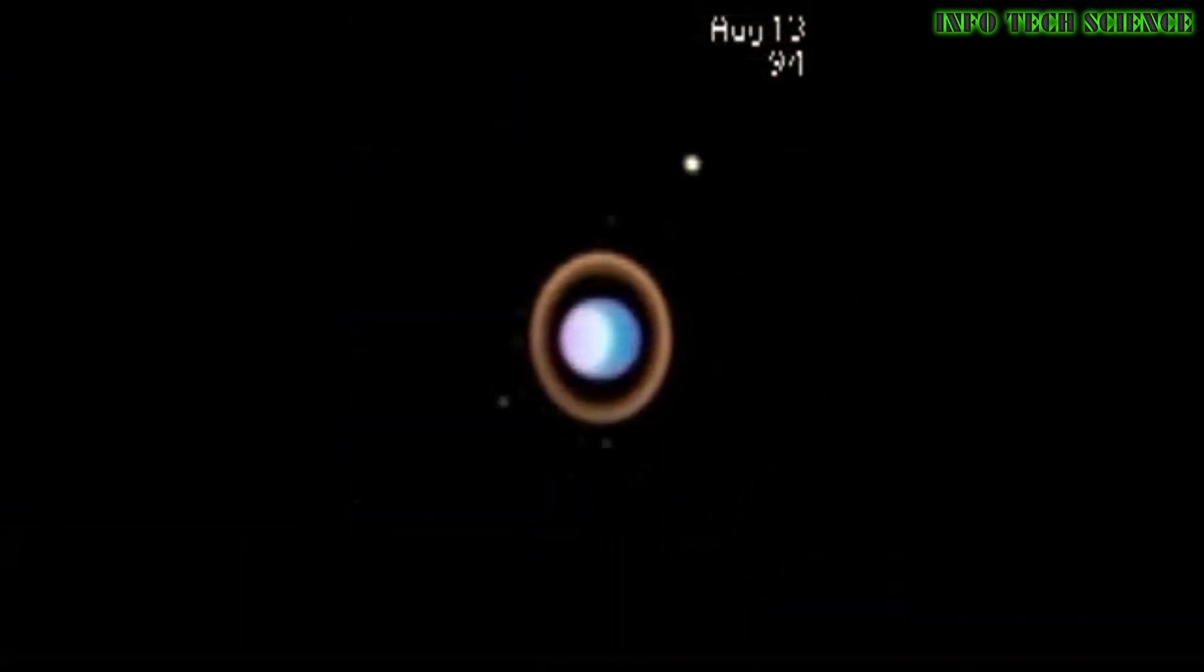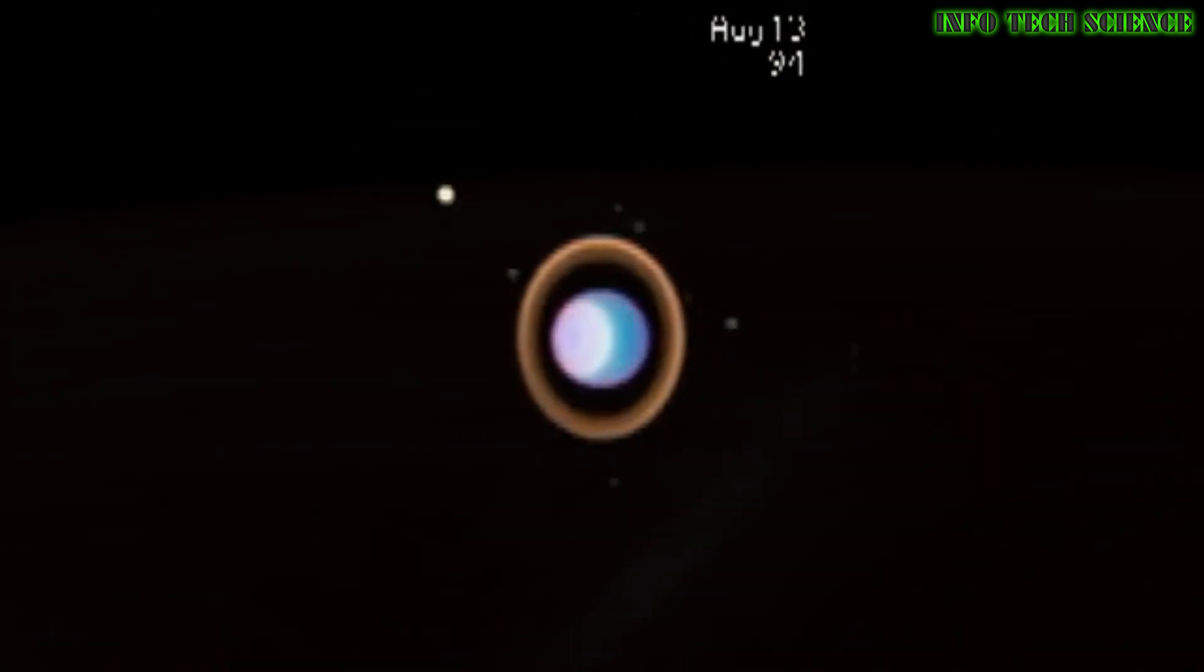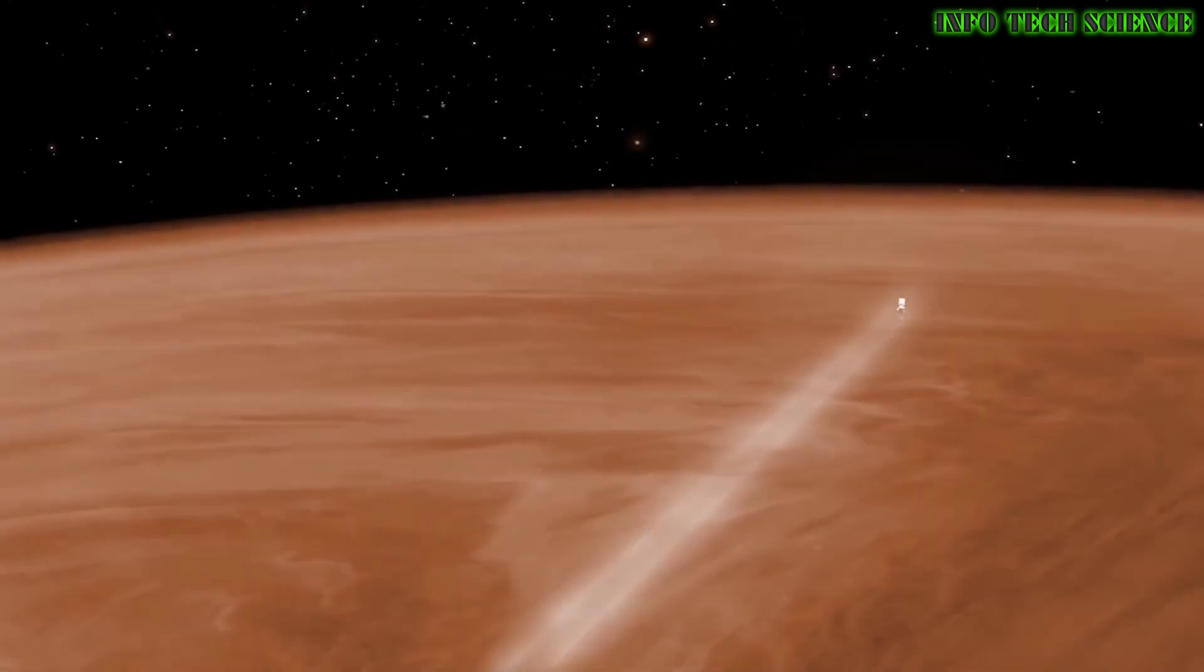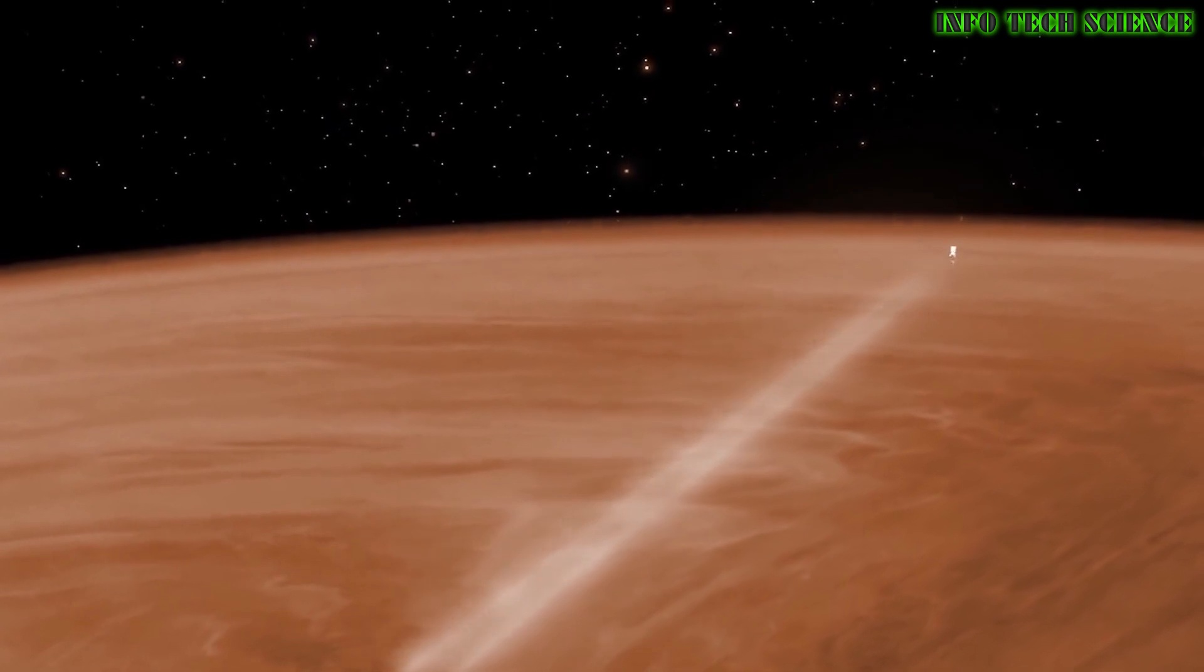No one's 100% sure what makes Venus and Uranus the odd ones out in our solar system's family of planets. Thanks for watching and don't forget to subscribe to the channel.